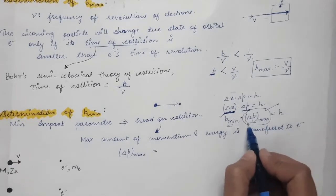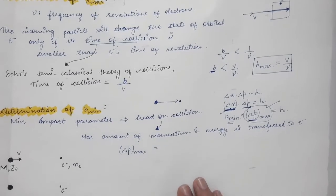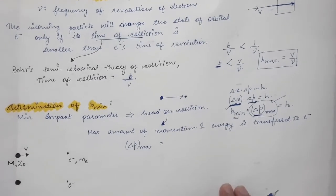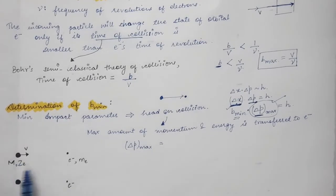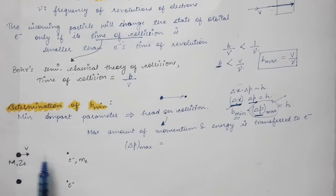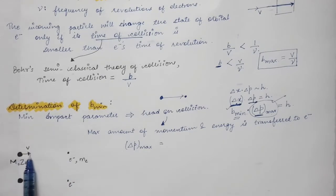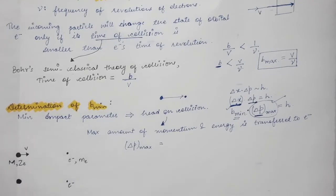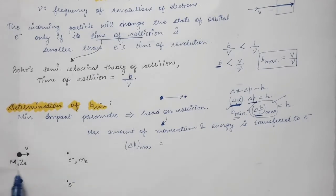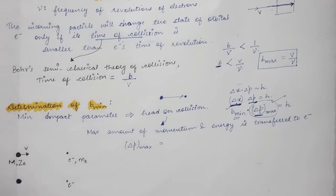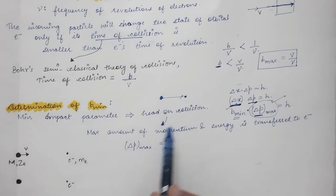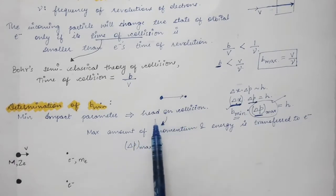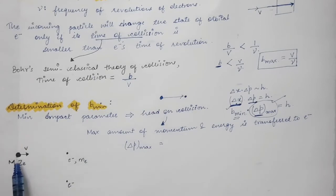In the frame where the heavy charged particle is at rest, the electron is seen moving toward it with velocity V. In a head-on collision in this frame, the electron retraces its path in the opposite direction with the same velocity V after the collision, transferring maximum momentum and energy.